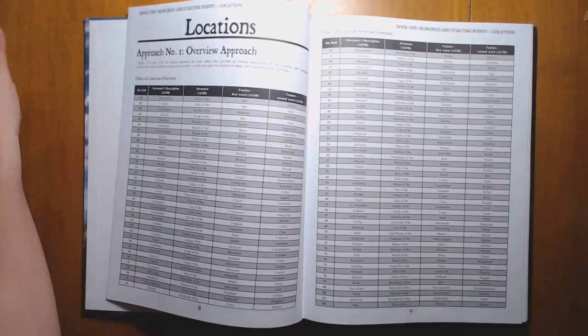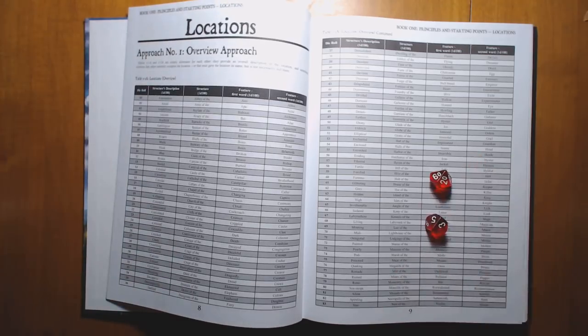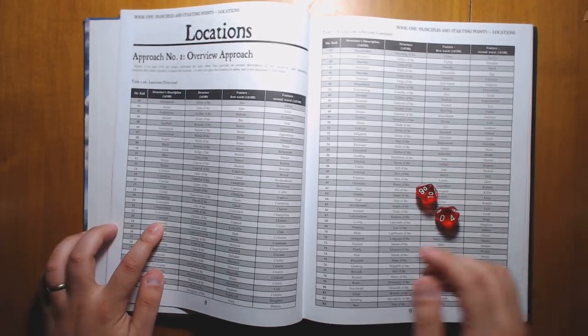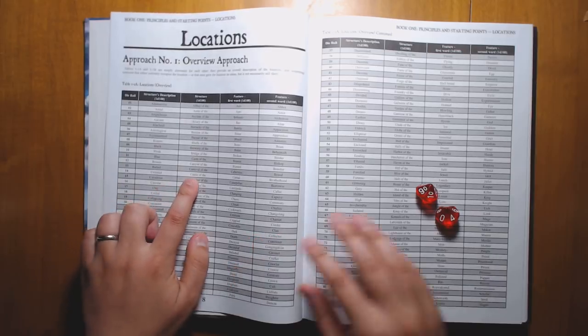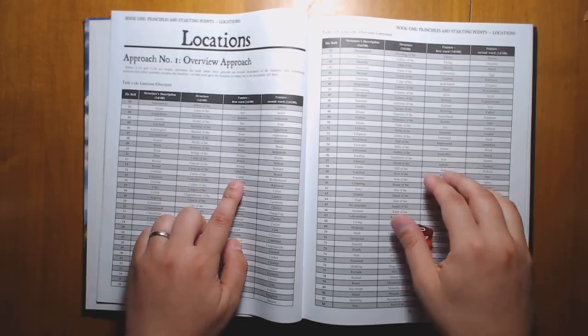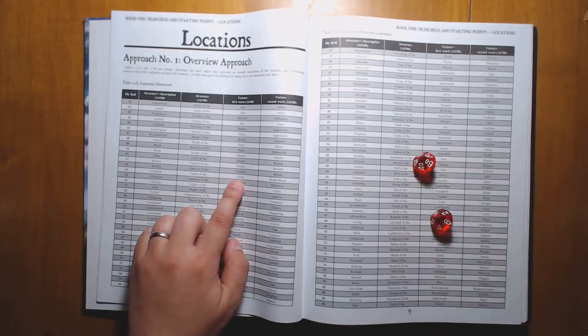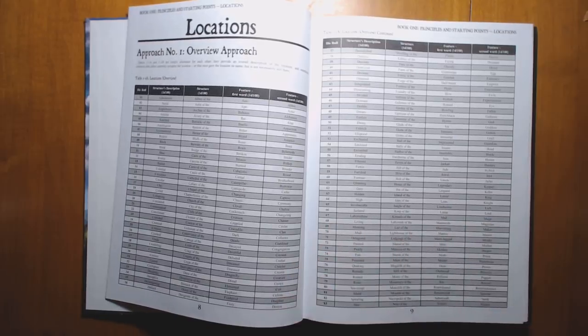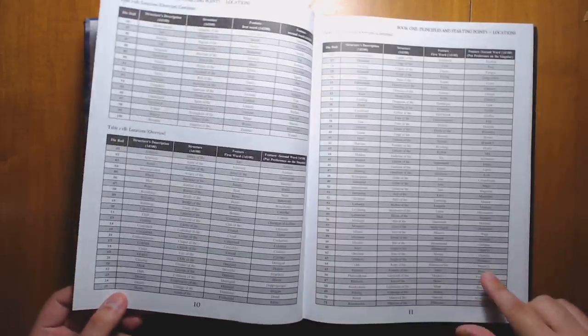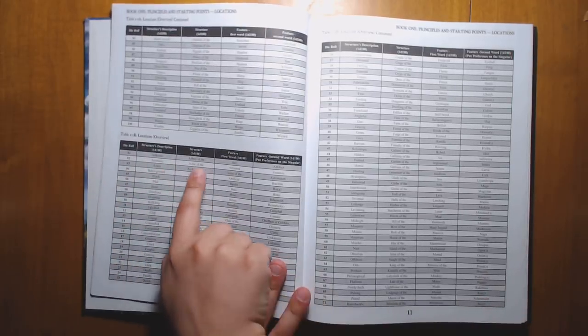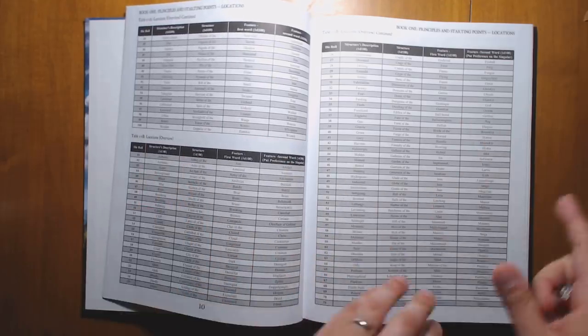It's very common for DMs to get stuck in a rut or feel like they've hit a dead end where everything feels the same. And rolling on these random tables can shake that up and give you lots of new ideas. So, for example, let's roll a random location here. This is a D100 table. We have 23, it is a corroded castle of the Carnal Lord. That sounds appropriately terrifying.